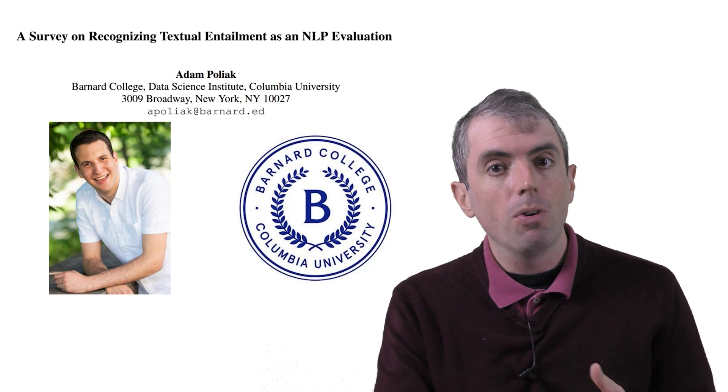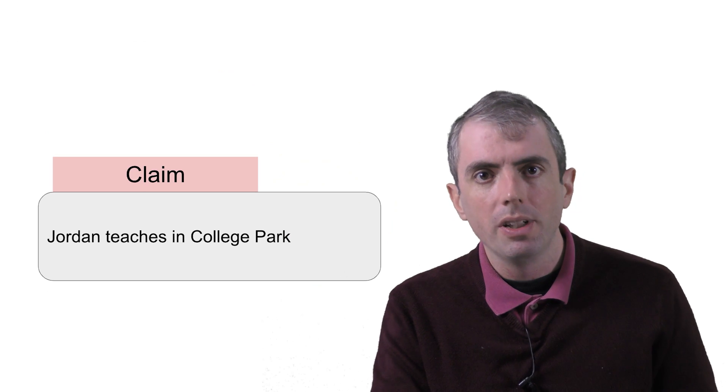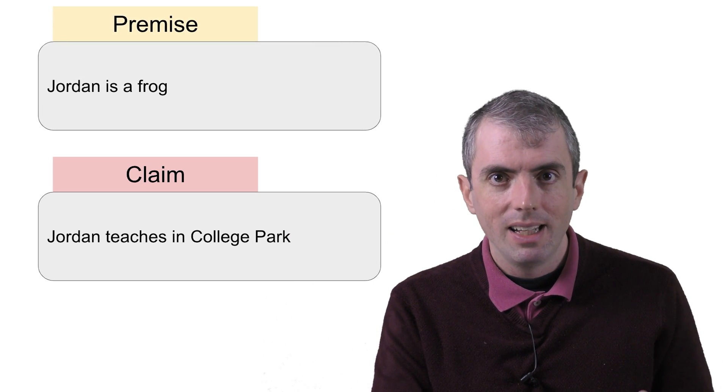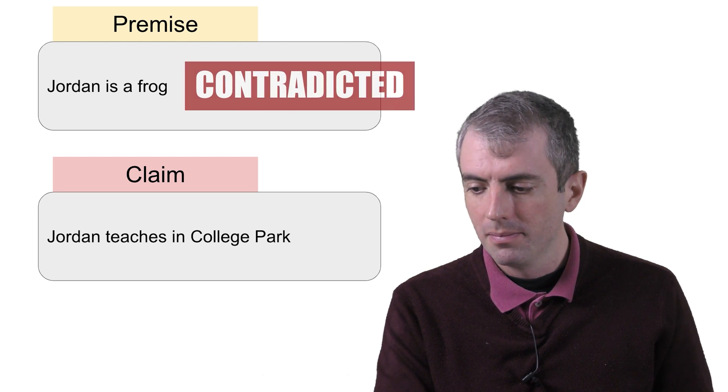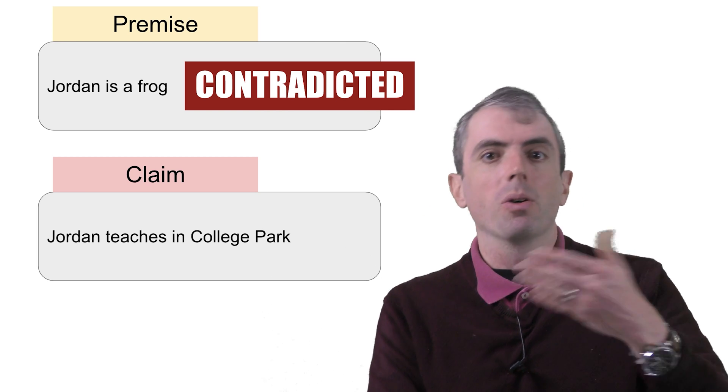In the pure form of entailment, A doesn't have to be true in the real world. Jordan is a frog entails that Jordan is an amphibian, while Jordan is a frog contradicts that Jordan is a professor.